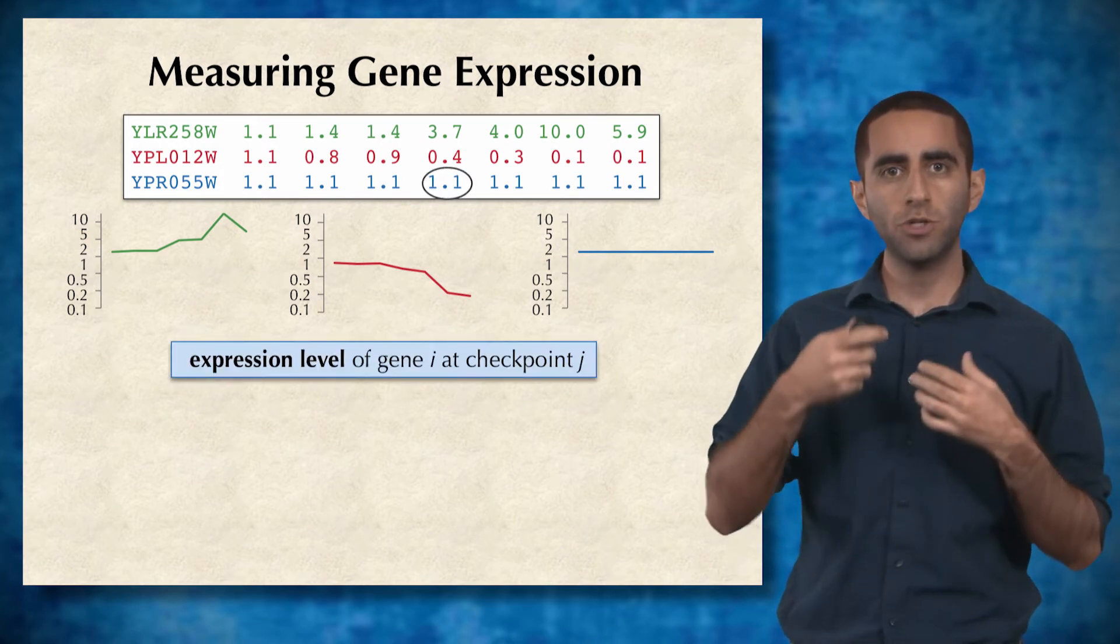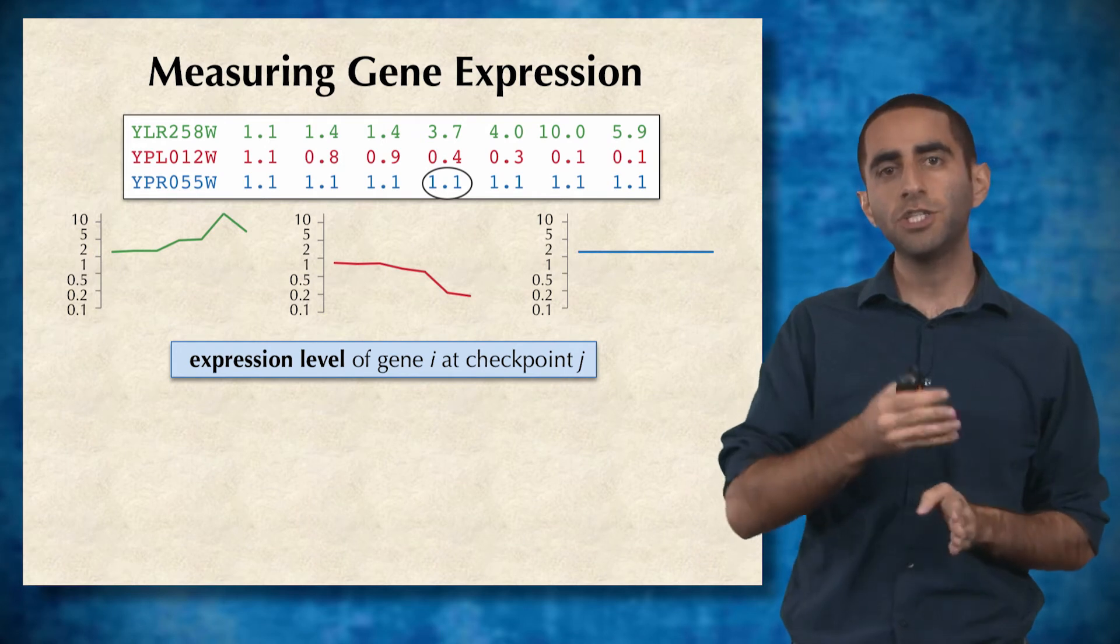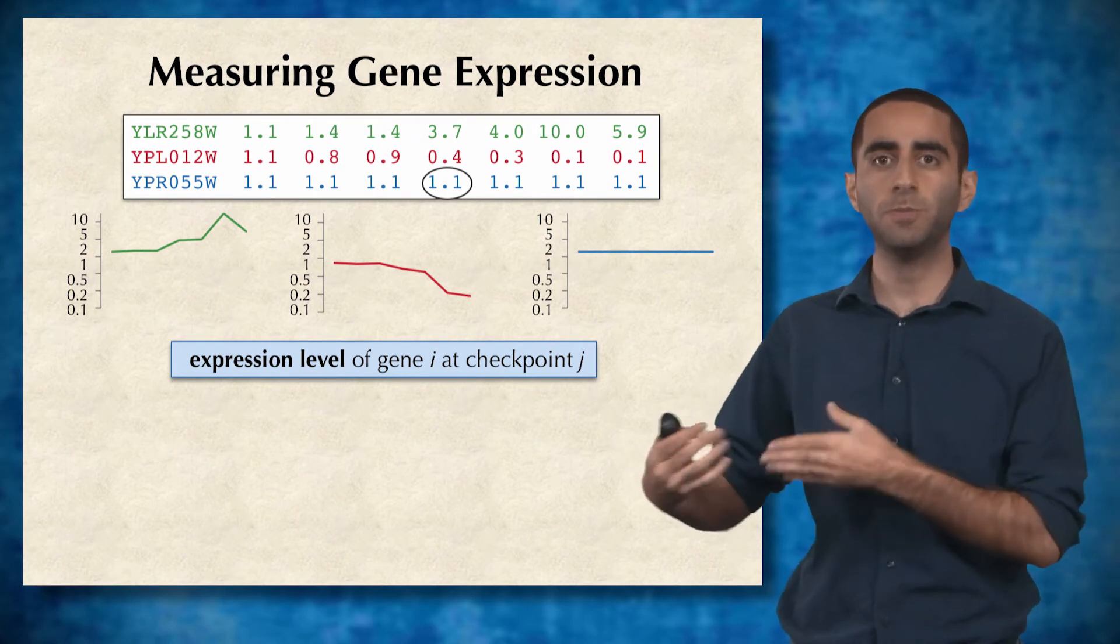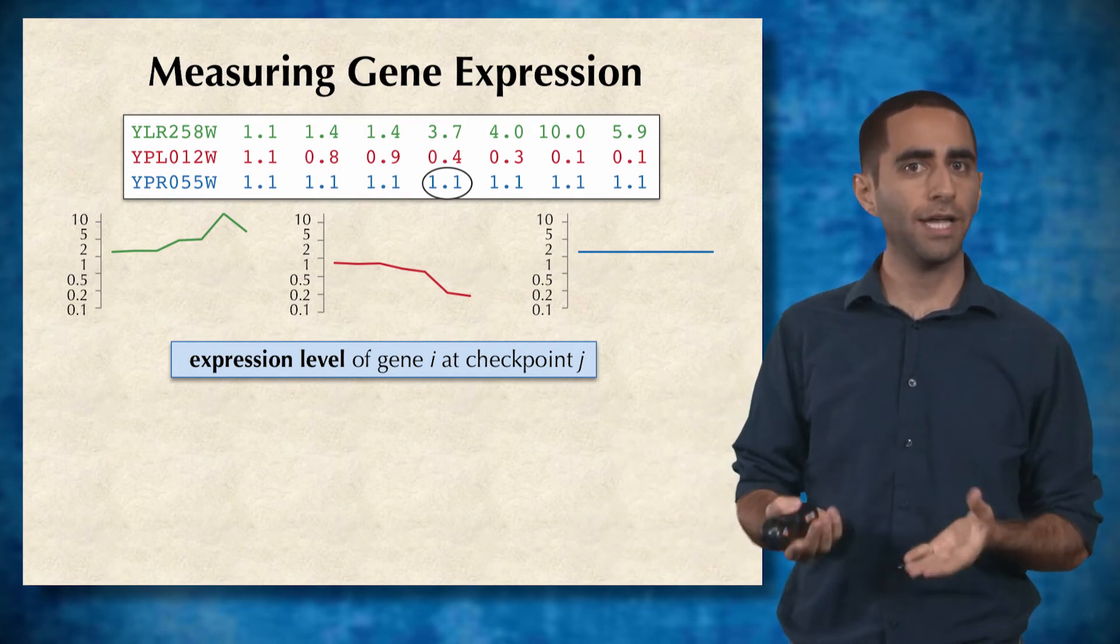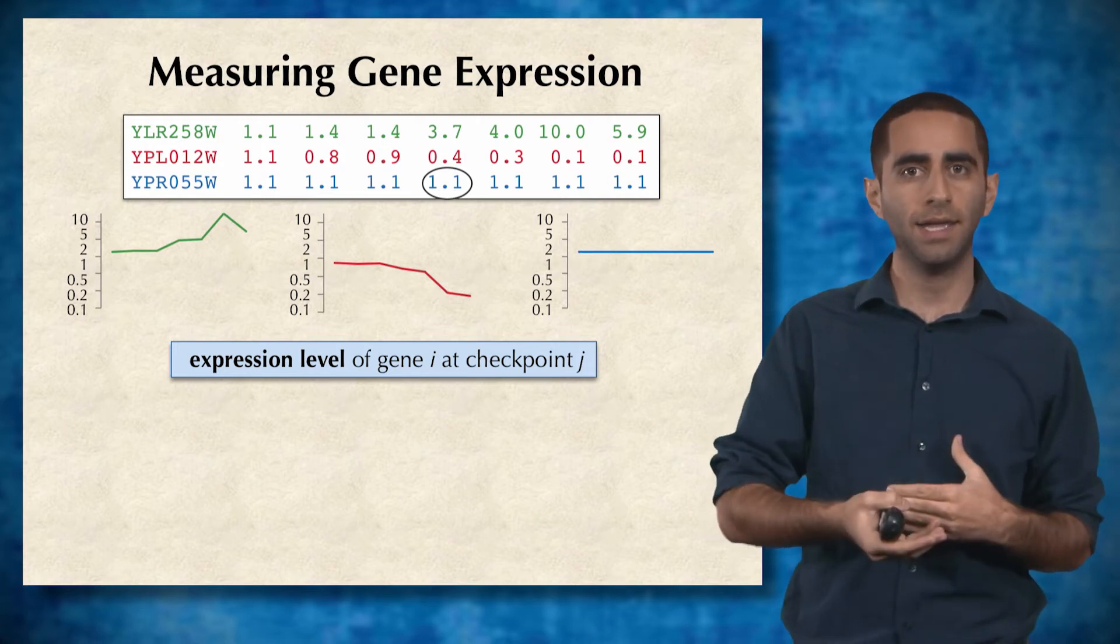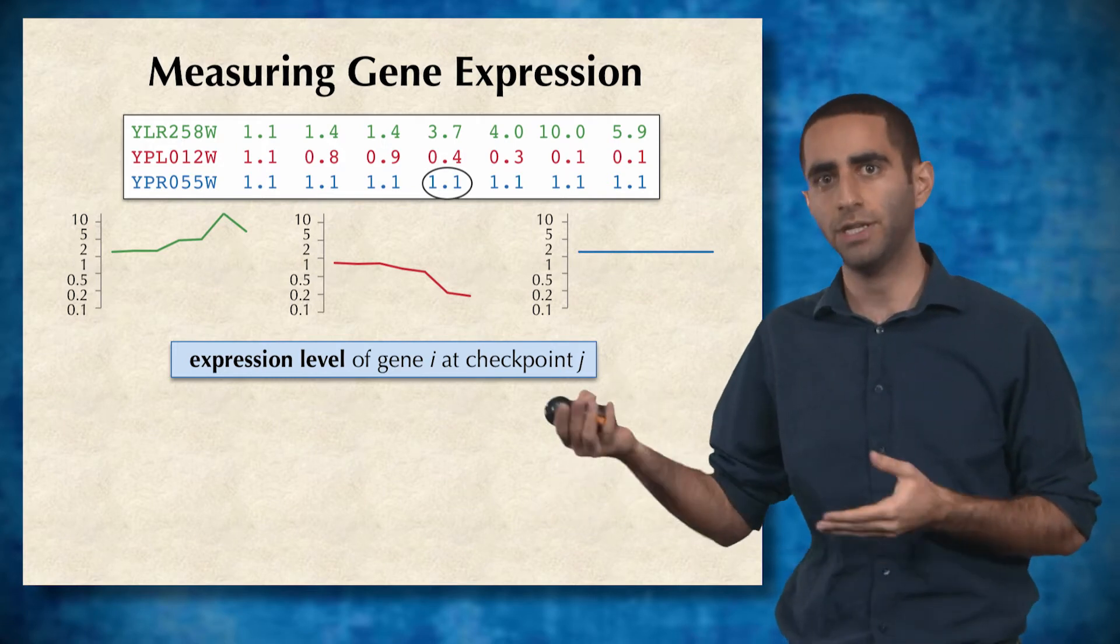Each row represents a gene, and each column represents a checkpoint or experiment. Each cell ij represents the expression of gene i at experiment or checkpoint j.